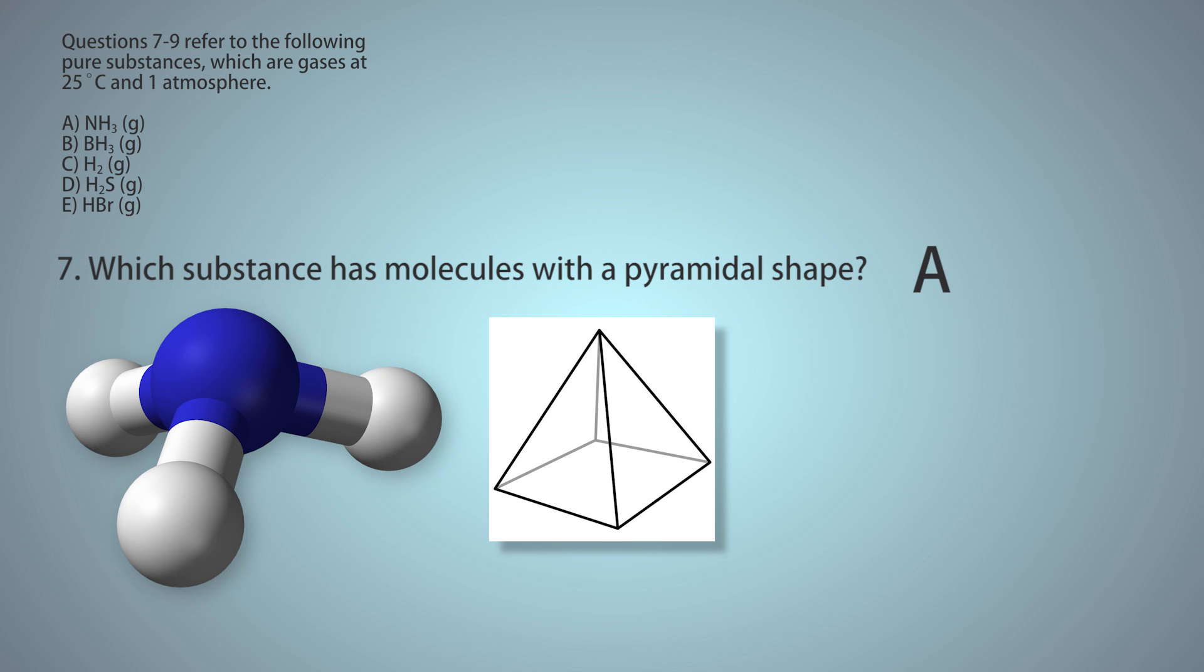There are only two possibilities in this list, A and B, because these are the only two molecules where there are four atoms. But NH3 has a lone electron pair, which allows it to form that pyramidal shape.